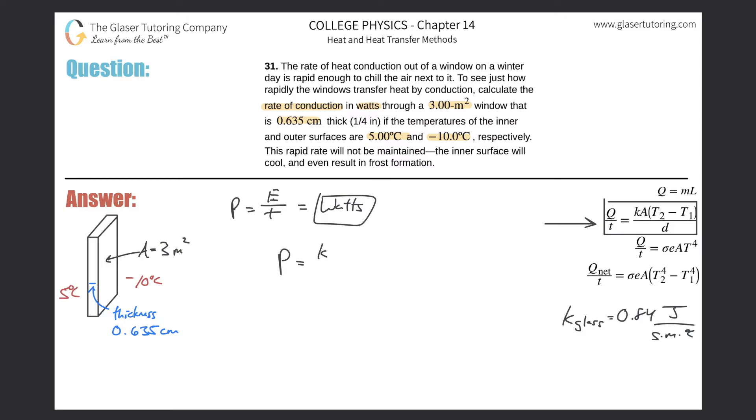That's equal to the thermal constant multiplied by the area over which the conduction is occurring, multiplied by T2 minus T1. Don't worry about the signage. Just plug in the larger value and then the smaller value second. The sign is really relative to what side you're talking about. And then D is the distance over which the conduction has to occur.